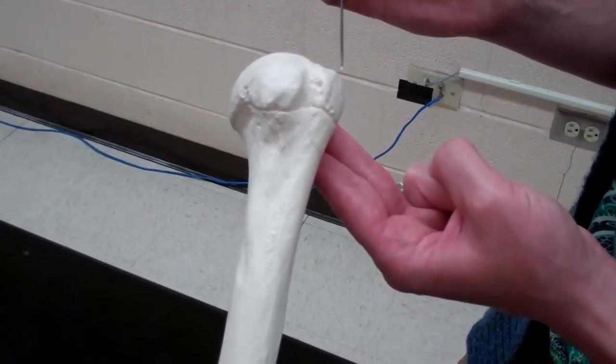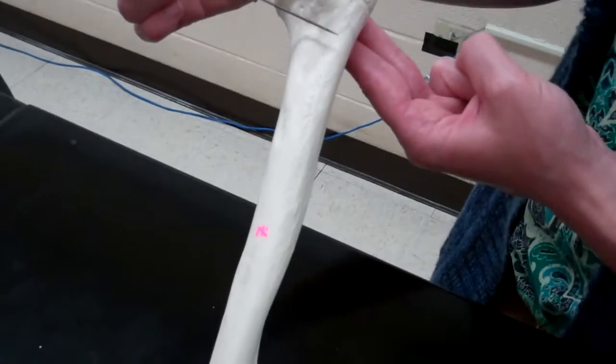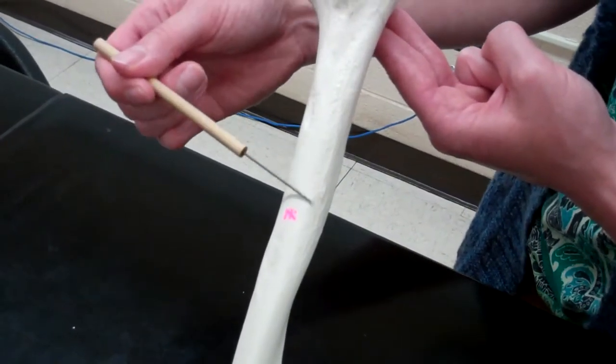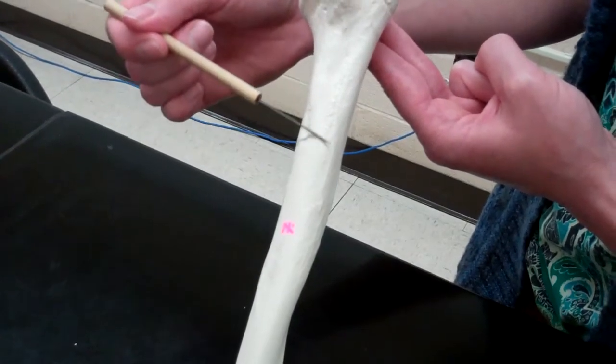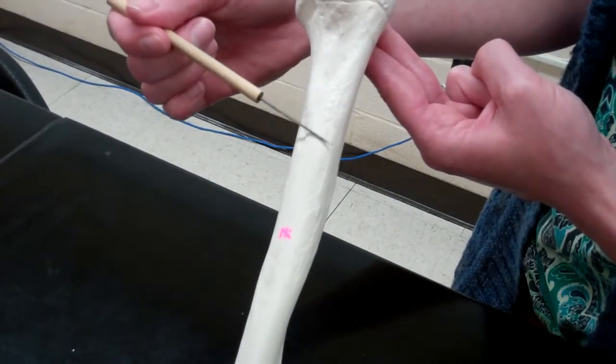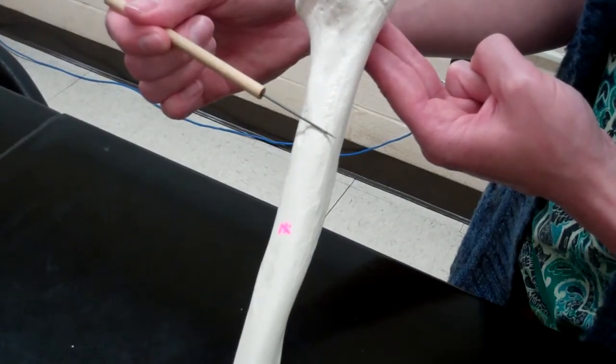Now as we follow the tubercles down towards about the middle of the arm, there's a bump, which is going to be hard to see on the video, but you can check it out in lab. This is the deltoid tuberosity. This is going to be a bump where our deltoid muscle is going to attach.